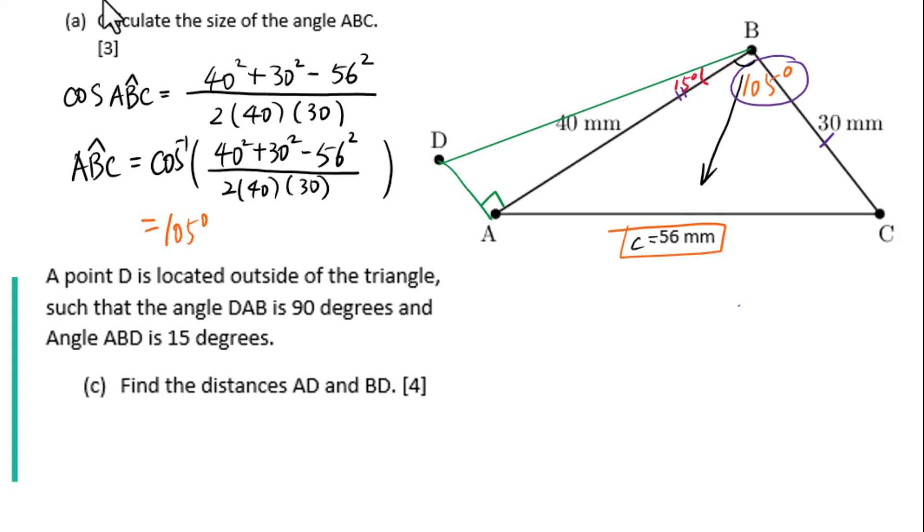Since this is a right triangle, we will use SOHCAHTOA. 15 degrees is given. This is the opposite side, adjacent side, hypotenuse side. AD is the opposite side. We are given adjacent side. O, A, go to tangent.